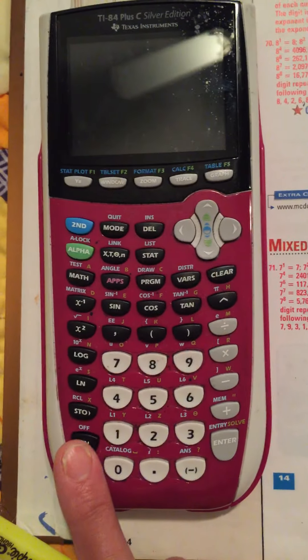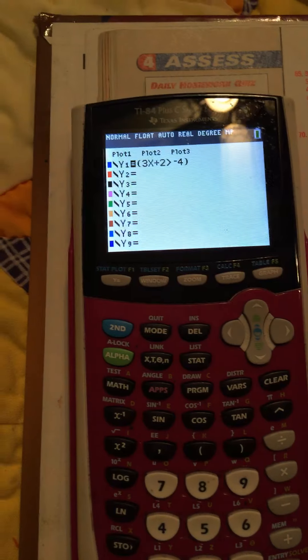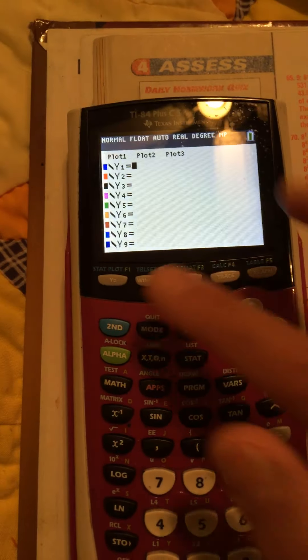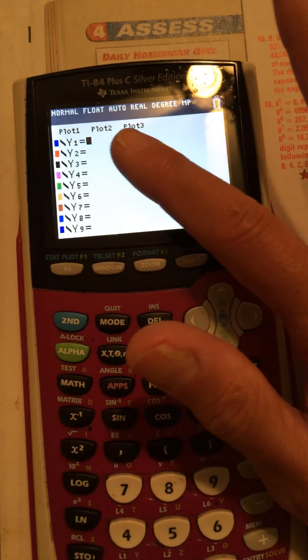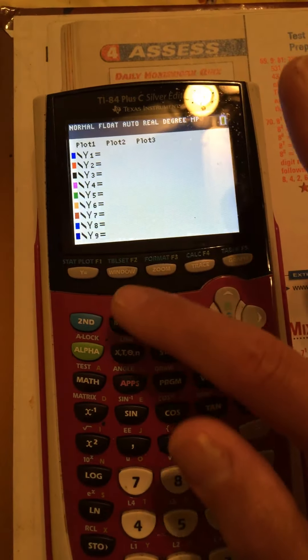So first we have to turn it on. The button's right there. Now I've got something else going on, so I've got to get rid of it. I'm gonna go up. That was Algebra 2. So I went to Y equals and then I hit clear to get rid of what was going on. But I want to get back to my regular math screen.